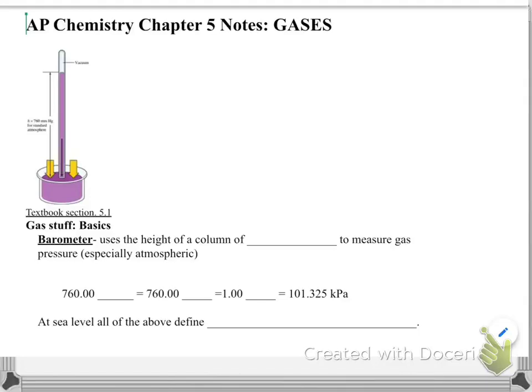Hi AP Chemistry students, it's Mrs. Johnson and we're starting with the chapter 5 notes on gases. In each section I've put the associated textbook reading. I encourage you, if this is new to you, use your textbook as a resource. To start with, a barometer uses the height of a column of mercury to measure gas pressure, especially atmospheric pressure.